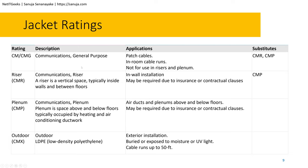CM and CMG are communication general purpose cables, used in patch panels and in-room cable runs. They are not ideal for risers or plenum spaces — in fact, using them in plenum spaces can be a code violation and a fire safety issue. You can substitute them with CMR or CMP, which are higher ratings.